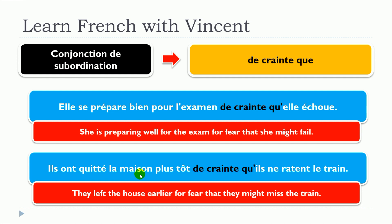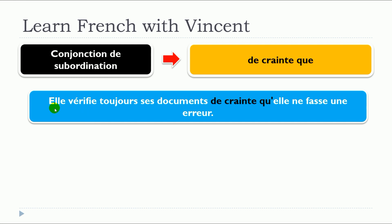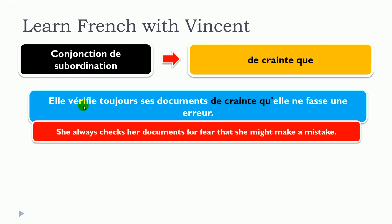Another example: 'They have quit the residence, de crainte qu'elle échoue.' And: 'Elle vérifie toujours ses documents, de crainte qu'elle ne fasse une erreur.' — She always checks her documents for fear that she makes a mistake.